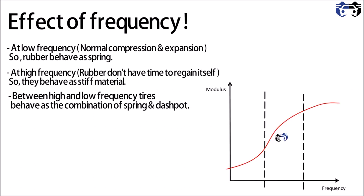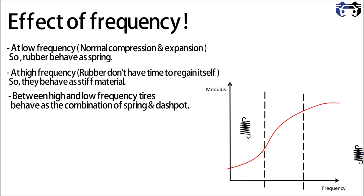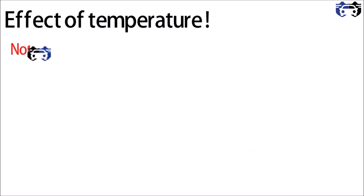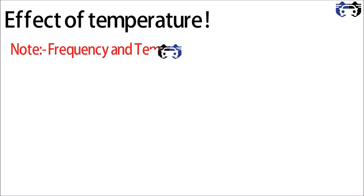As you can see in this curve — modulus versus frequency — at low frequency we have a lower modulus and the tire behaves as a spring. At moderate frequency the tire behaves as a spring and dashpot combination. At higher frequencies the tire behaves as a rigid or stiff material with the highest value of modulus.